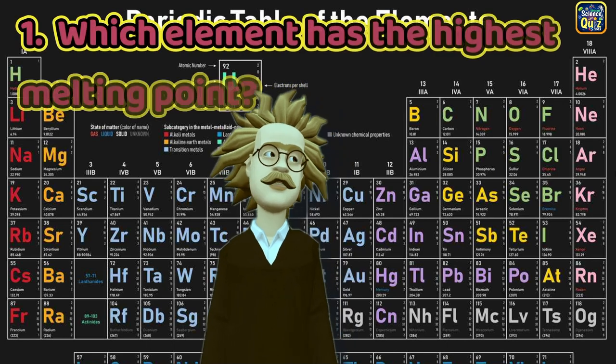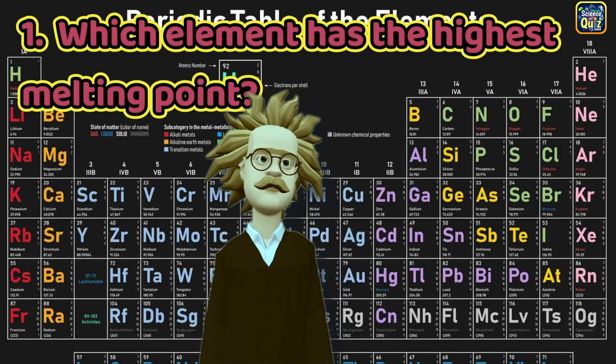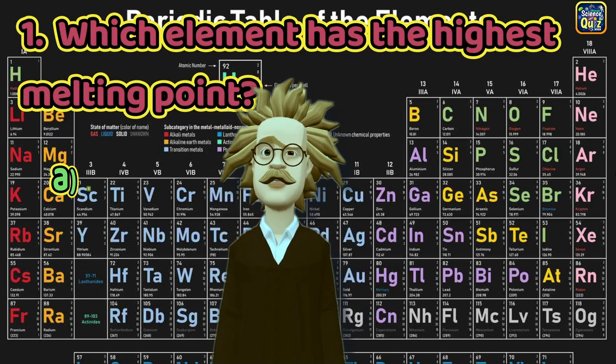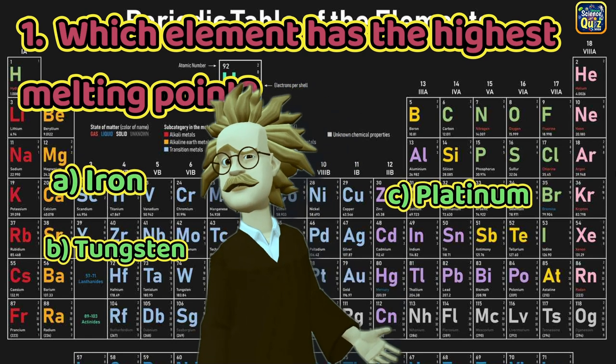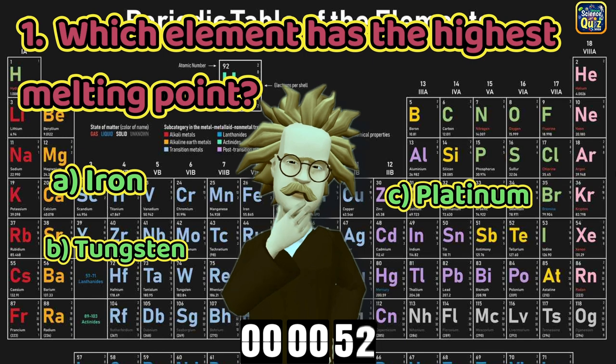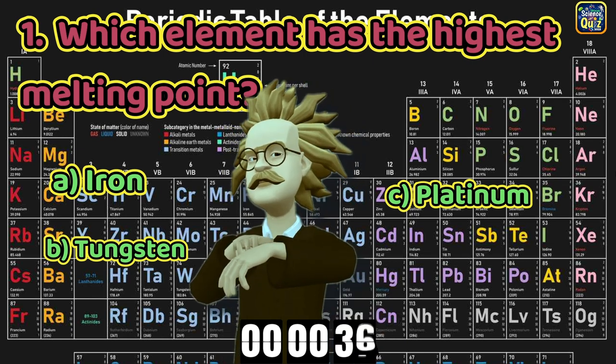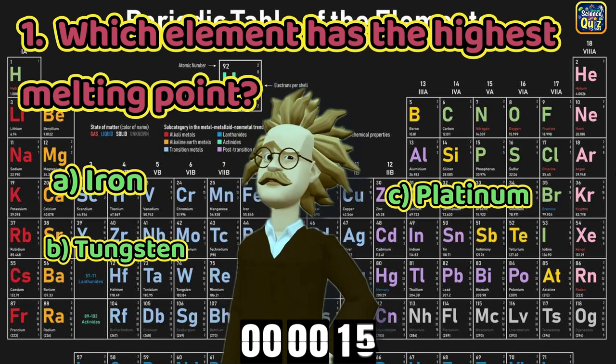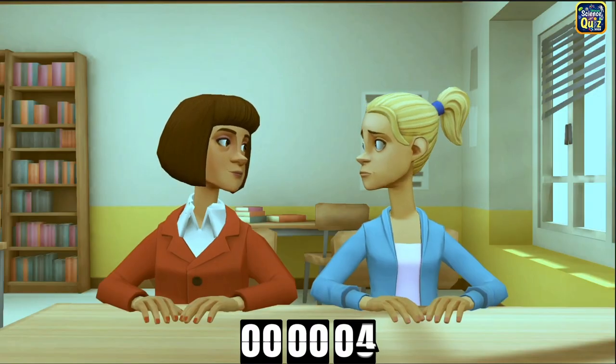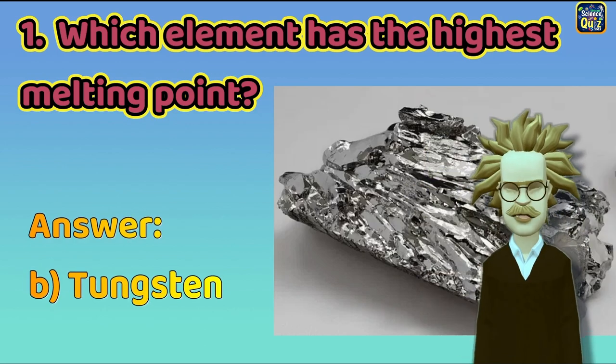Question 1: Which element has the highest melting point? A. Carbon, B. Tungsten, C. Platinum. The right answer is B. Tungsten.